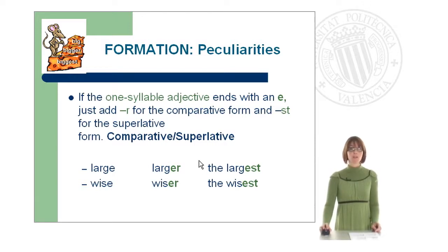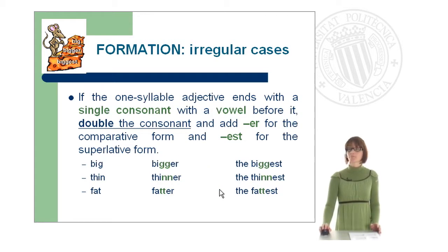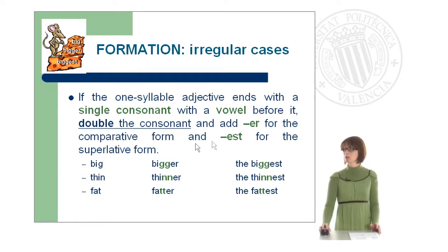Now let's have a look at some peculiarities in the formation of the comparative and superlative of adjectives. If a one-syllable adjective ends with an -e, just add -r for the comparative and -st for the superlative — for example: large, larger, the largest; wise, wiser, the wisest. If a one-syllable adjective ends with a single consonant with a vowel before it, double the consonant and add -er or -est — for example: big, bigger, the biggest; thin, thinner, the thinnest; fat, fatter, the fattest.